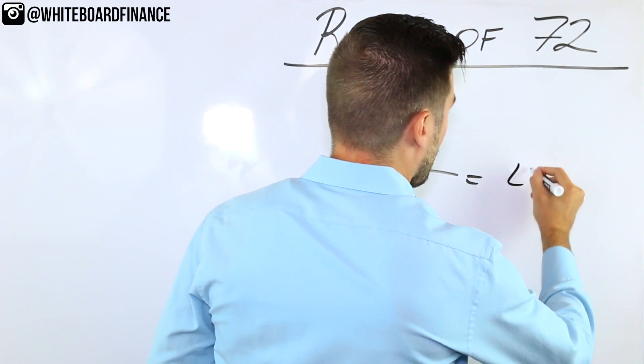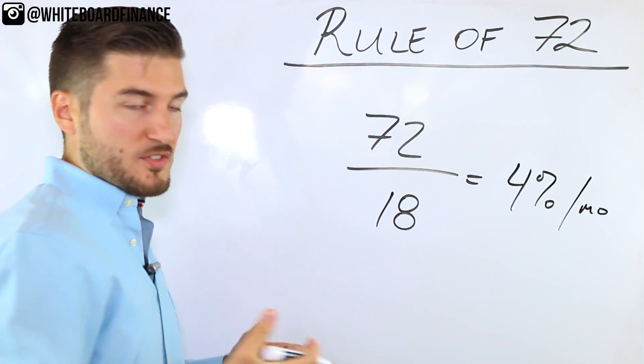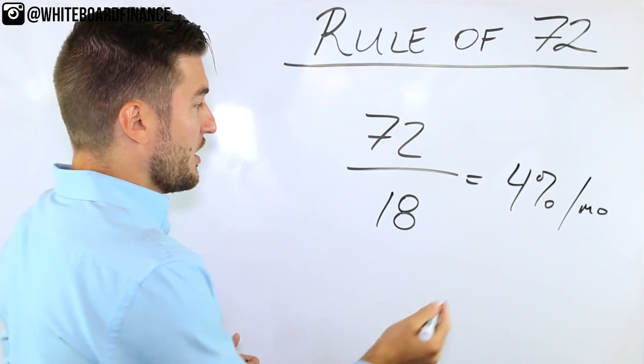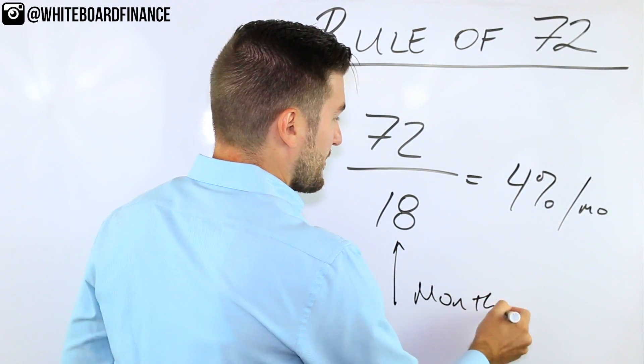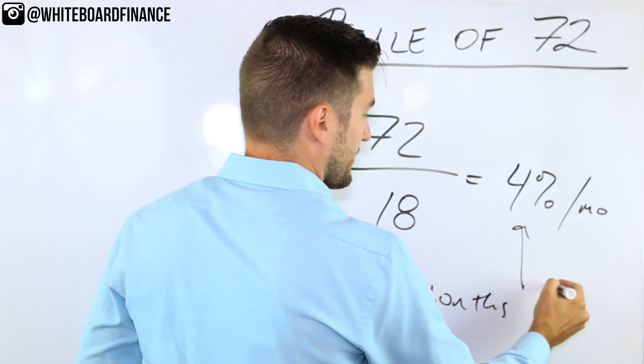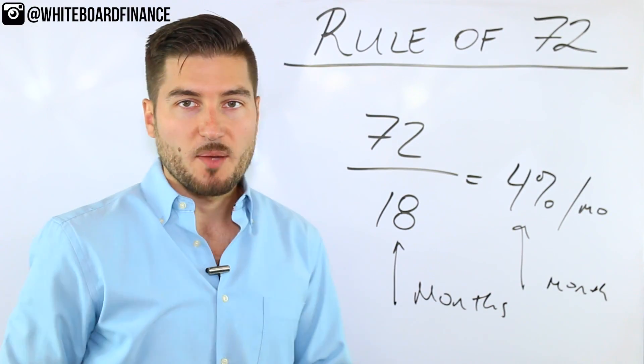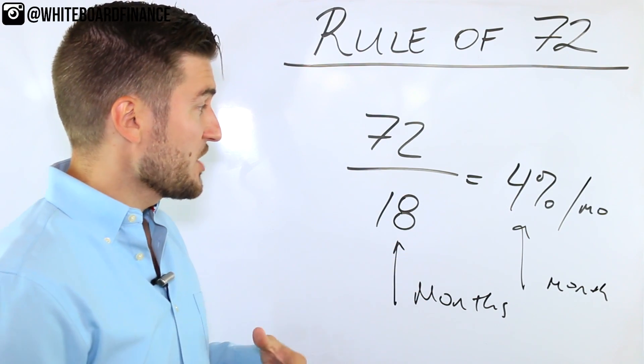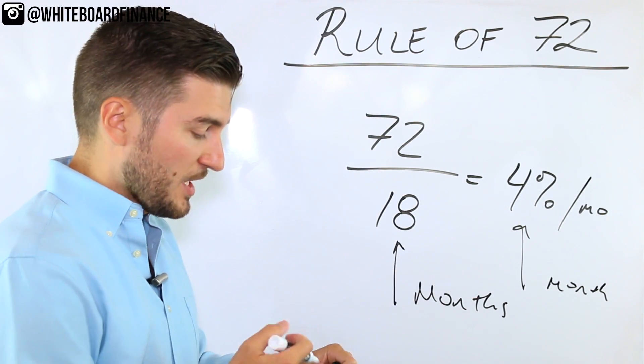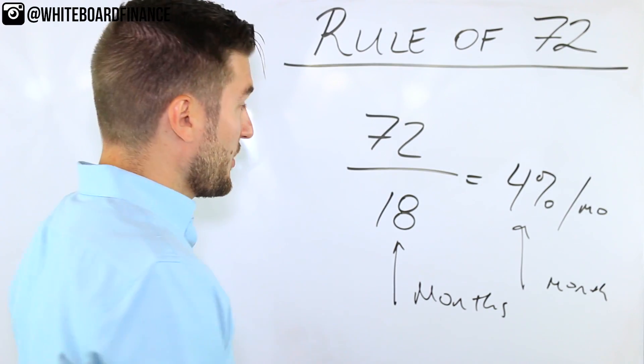My channel would have to grow at a rate of 4% per month in order to double in the number of subscribers. Why is that? The question was 18 months, 4% per month. These always have to be the same time period. Otherwise, you're not comparing apples to apples. So make sense? How long does it take for my channel to double in 18 months? It would have to grow at 4% per month over 18 months to double. Pretty simple, right?